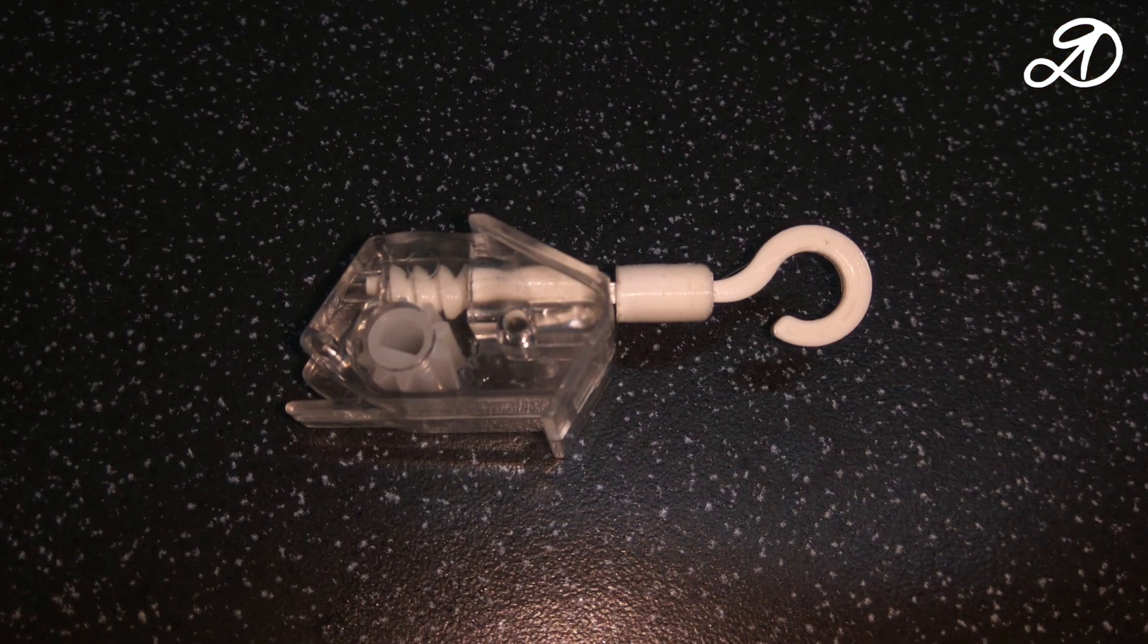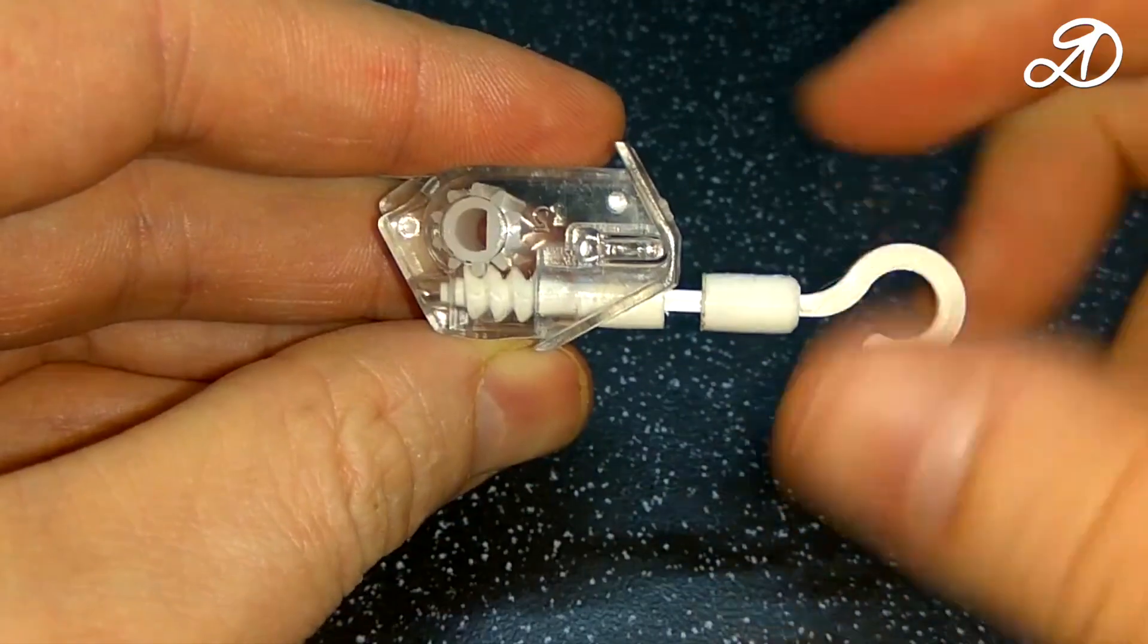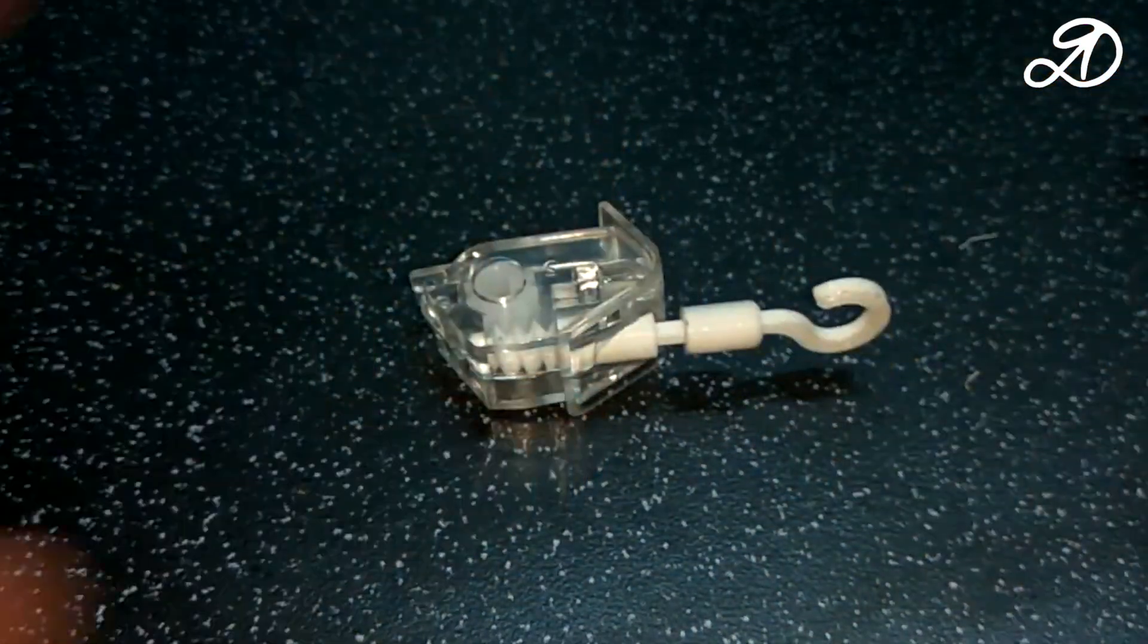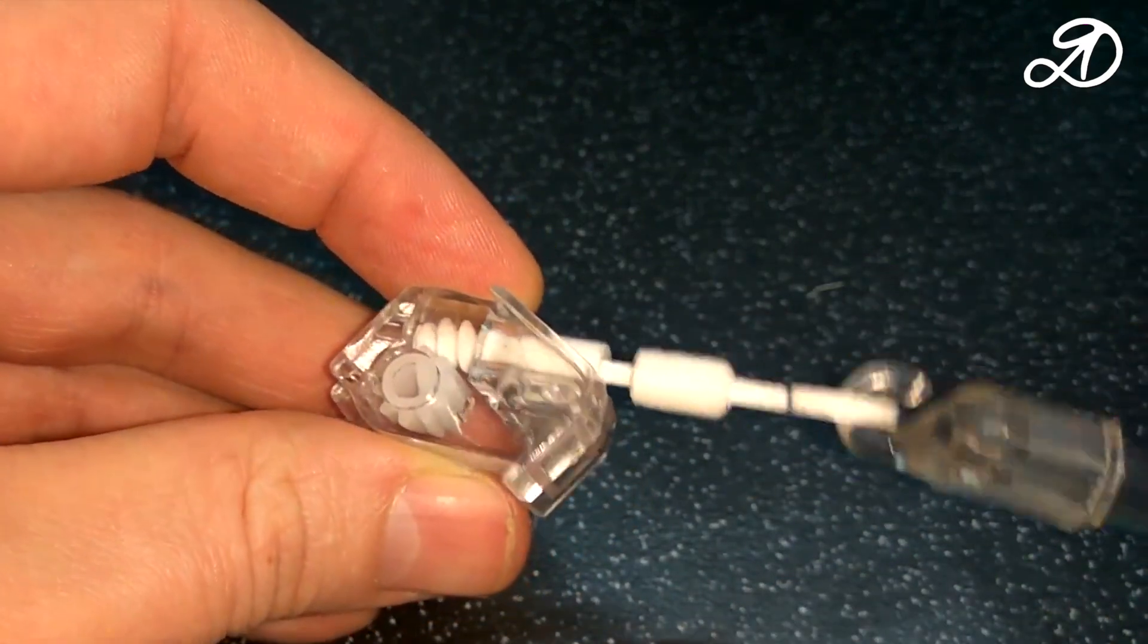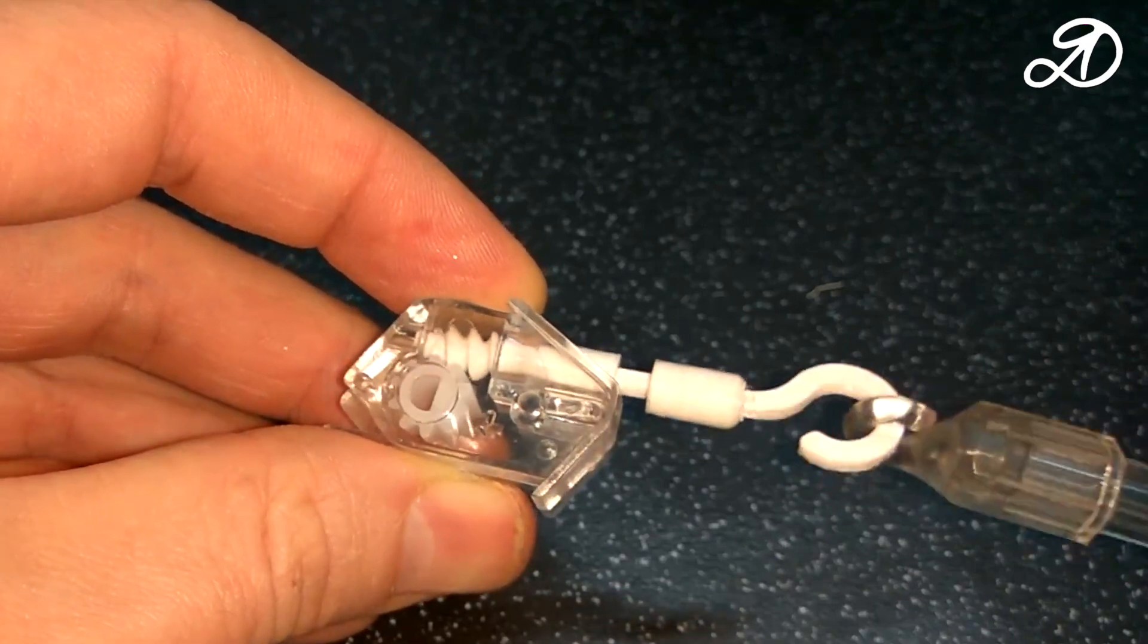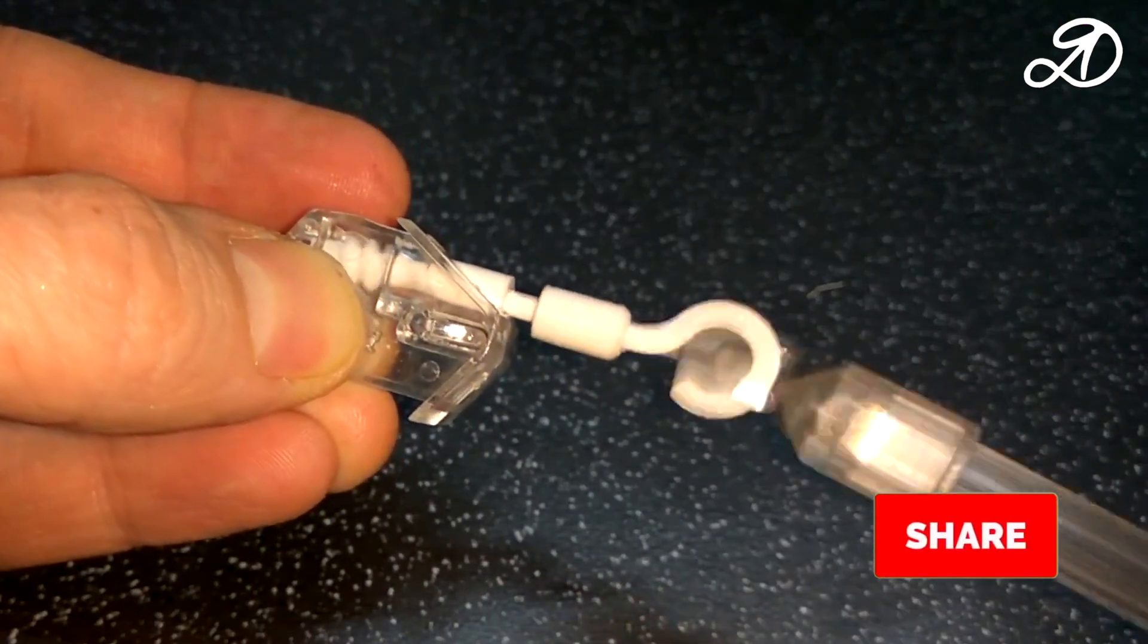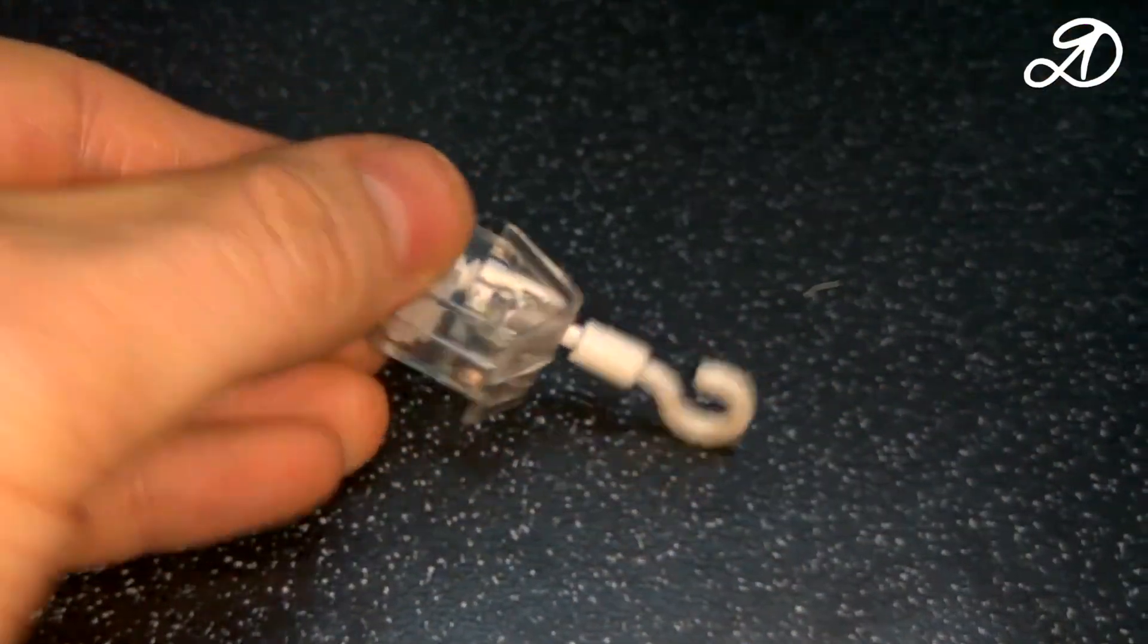The build was successful. It looks good. The worm is perfectly engaged with the worm wheel. Now let's try how it will work with the stick. Everything turns easily in both directions.